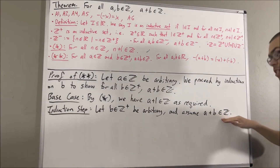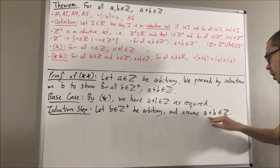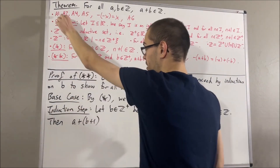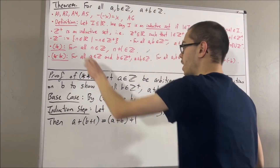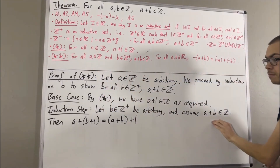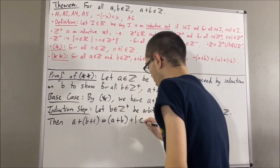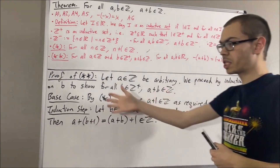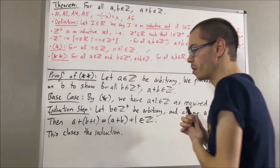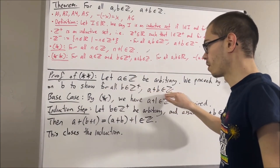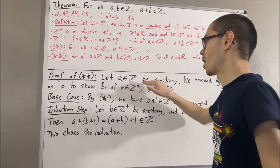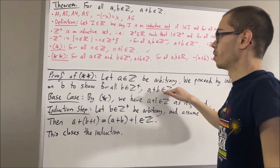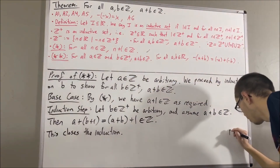In the induction step, we give ourselves an arbitrary positive integer b and assume that a plus b is an integer. The goal is to show that a plus b plus 1 is an integer. By axiom 2, the associative law, we can write this as a plus b, quantity, plus 1. Applying star with n replaced by a plus b, we have a plus b, plus 1, is an integer. This closes the induction. By induction, we have proven for all positive integers b, a plus b is an integer. Since a was an arbitrary integer, we have proven for all integers a and for all positive integers b, a plus b is an integer — that is, star-star.